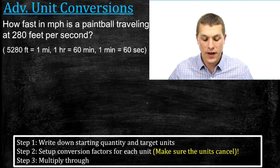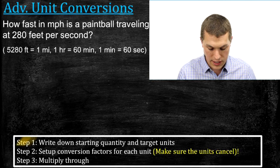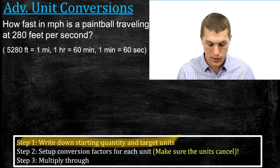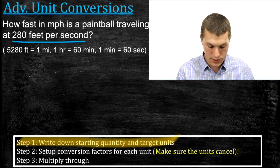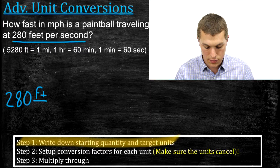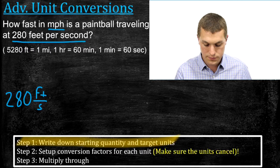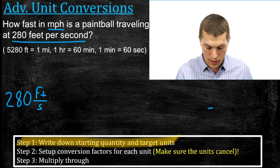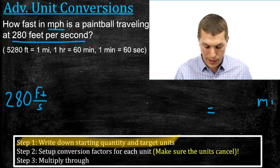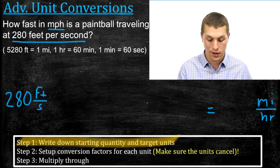In this problem, we're asked how fast in miles per hour is a paintball traveling if it's going 280 feet per second. We're going to follow the same three steps. Our starting quantity is 280 feet per second, and we want to go to miles per hour — so miles go on top and hours go on the bottom. That's important because it tells us how to write our conversion factors.